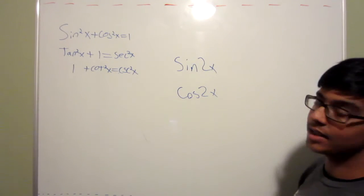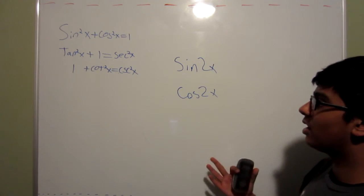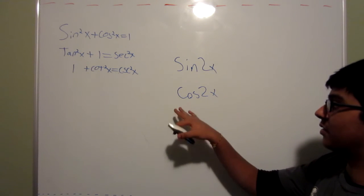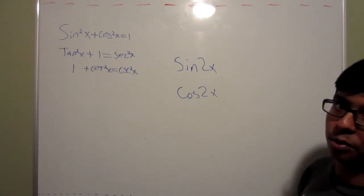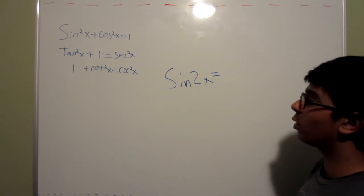Alright, now for the other identities. We have the sine 2x and cosine 2x. Both of these are not that hard to remember, but they are harder to remember because of the cosine 2x being so complicated in its formulas.